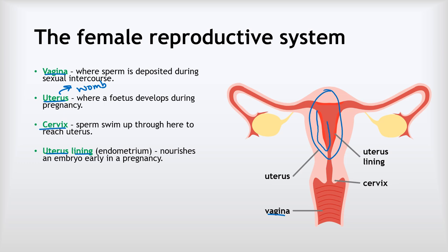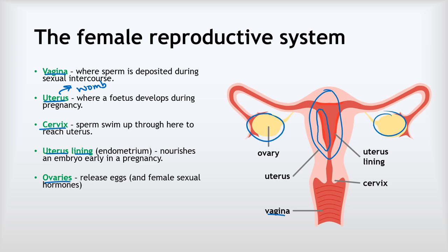If you look carefully on the walls of the uterus, you can see that red lining there. This is very soft tissue with lots of blood that is there to nourish an embryo early in a pregnancy. We have the ovaries — two ovaries, one on each side — and their job is to release eggs, released once each menstrual cycle. They also produce the female sexual hormones, oestrogen and progesterone.